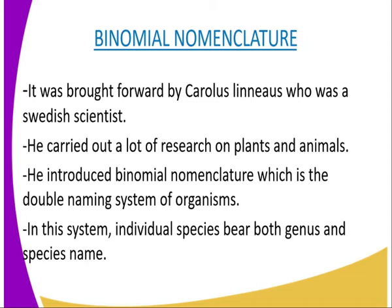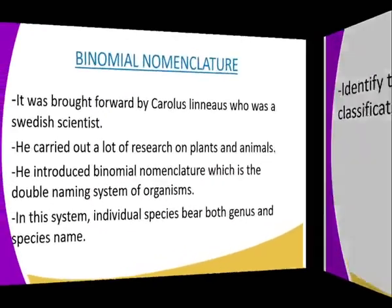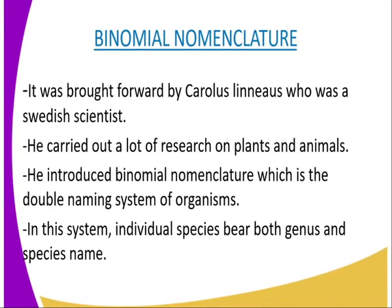The names must be underlined separately. For example, the golden black jackal, which is known as Canis aureus, and the dog, which is Canis familiaris, have many characteristics in common and belong to the same genus. However, they do not belong to the same species, and hence each group has its own specific name. We can also have the lion, known as Panthera leo, and the leopard, known as Panthera pardus — they belong to the same genus but different species, meaning they cannot mate.